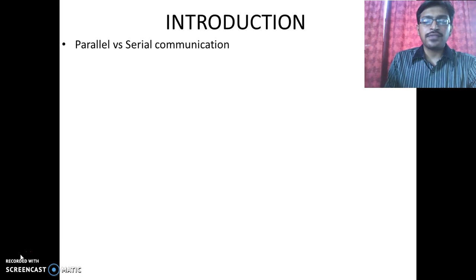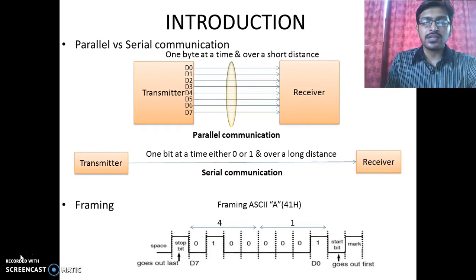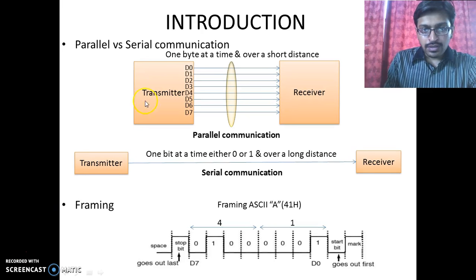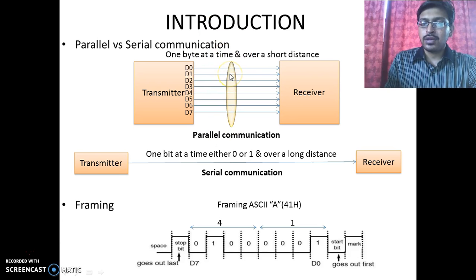To start with, first of all, we will see the need of serial communication. Basically, the data can be transmitted in two ways — one is parallel and the other one is serial. In case of parallel communication, the data is transmitted one or several bytes at a time. To do that, eight or more parallel lines are required to transmit the data.